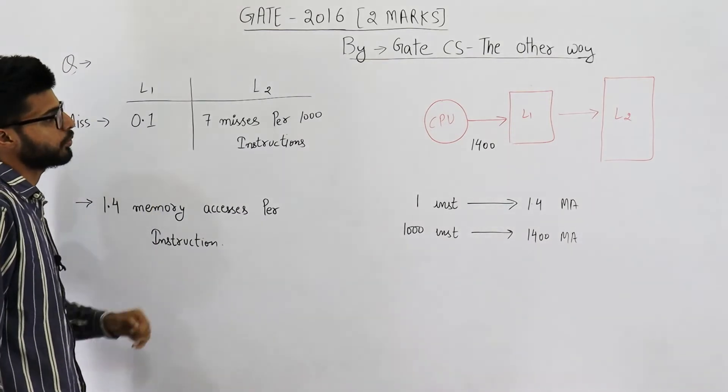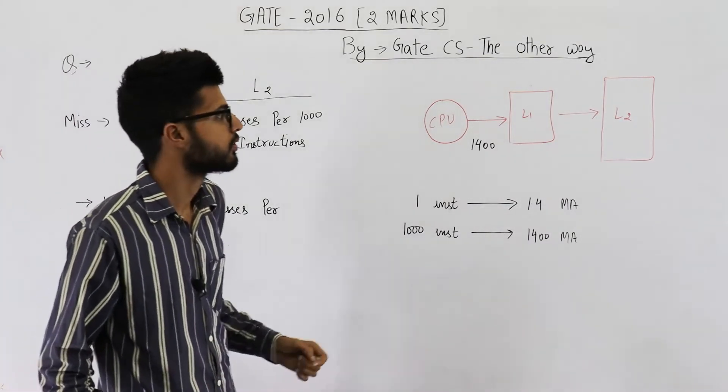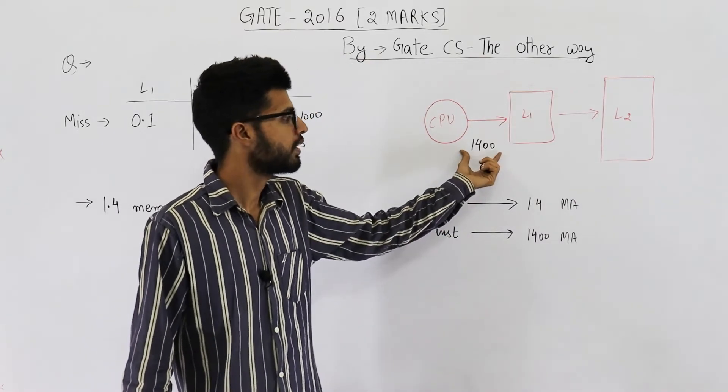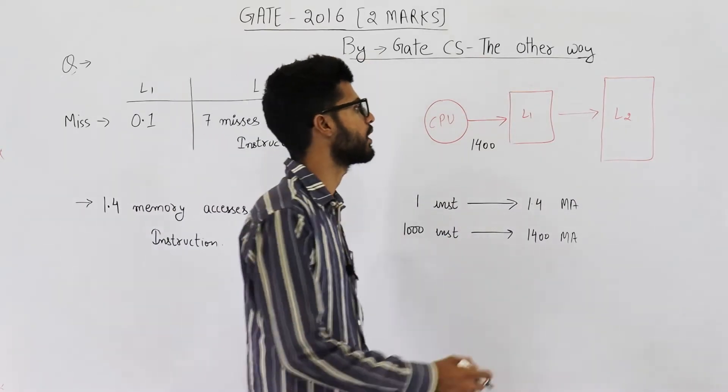L1's miss rate is 0.1. How many times will L1 ask for a word from L2? That is 0.1 into 1400 which is 140.